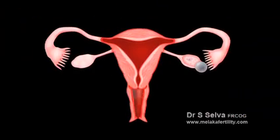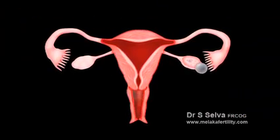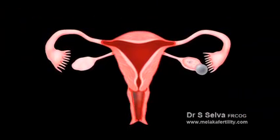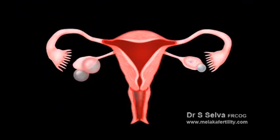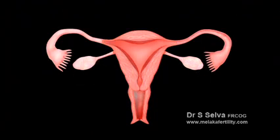Usually only one cyst appears at a time. Sometimes more than one follicular cyst may be present if medication to induce ovulation is taken. It normally goes away without treatment after a few weeks.